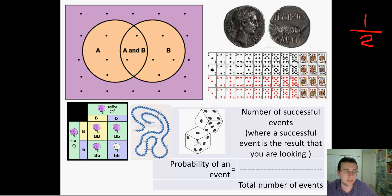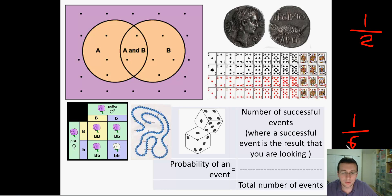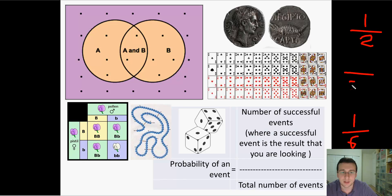What about throwing a die? When you throw a die, the chance of getting a certain side is one out of six, because there are six sides. And what is the chance of getting a specific card from a deck? There are 52 cards in a deck, so the chance of getting one specific card is one out of 52.